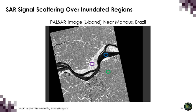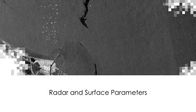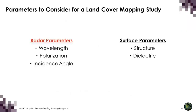There are different types of radar data, and depending on the characteristics of the sensor, you may be better able to detect flooded or inundated vegetation. Let's discuss some of the radar and surface parameters you should take into account. There are three radar instrument parameters that influence the transmission characteristics of the signal: wavelength, polarization, and incidence angle.